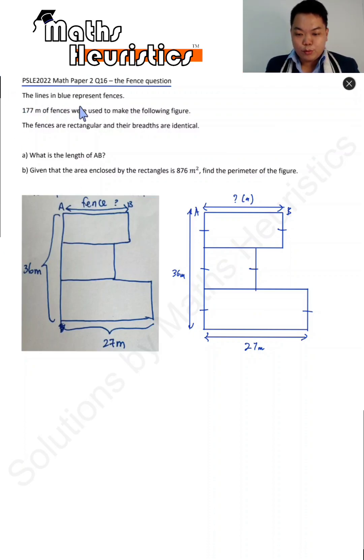The lines in blue represent fences. 177 meters of fences were used to make the following figure, and the fences are rectangular and their breadths are identical. So I'd like to emphasize this - if they are rectangular and identical, their breadths are identical, it means that all lines meet each other at right angles and all their breadths are the same.